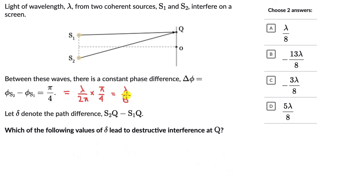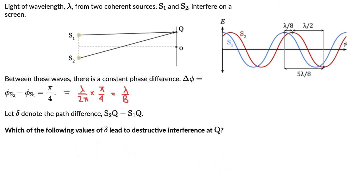And we can try and represent this in the form of a diagram. So for that, let me hide this. We can represent it in this manner. So you can see S2 is ahead of S1 by λ/8. And for destructive interference,